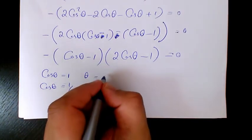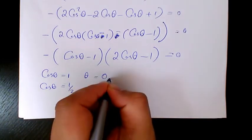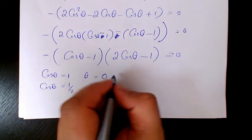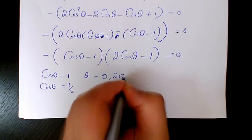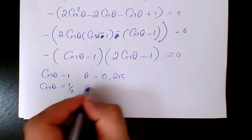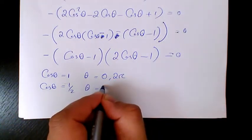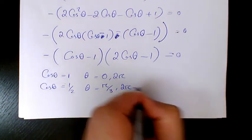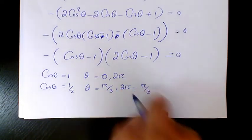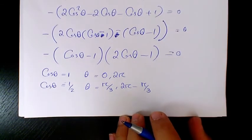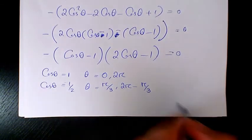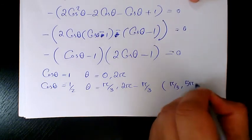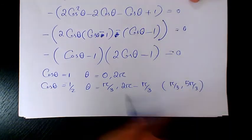For cosine theta equals 1, theta equals 0 and 2 pi. For cosine theta equals 1/2, theta equals pi over 3 and 2 pi minus pi over 3, which is 5 pi over 3. So the four answers from 0 to 2 pi are: 0, pi over 3, 5 pi over 3, and 2 pi.